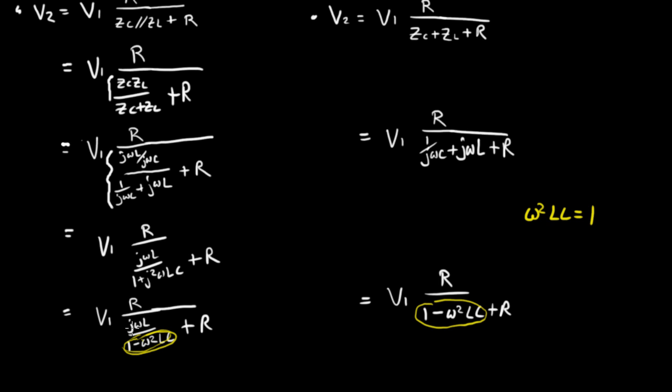So j omega L divided by 1 minus 1, j omega L divided by 0 is going to be infinity. And so infinity plus R is still infinity and R divided by, V1 times R divided by infinity is equal to 0, it's going to be 0.